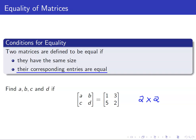We will just equate the entries. Hence, we have A is equal to 1, B is equal to 3, C is equal to 5, and D is equal to 2.